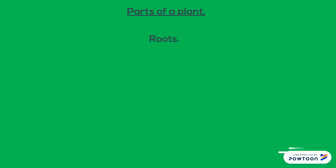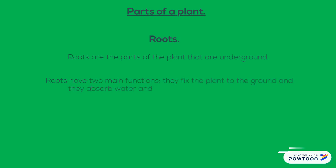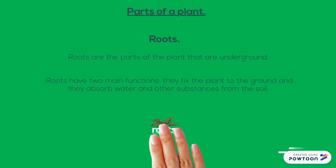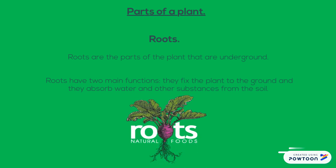Parts of a plant. Roots. Roots are the parts of a plant that are underground. Roots have two main functions. They fix the plant to the ground, and they absorb water and other substances from the soil. There you are an example of roots.